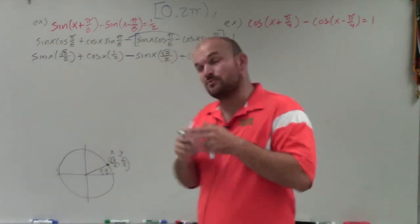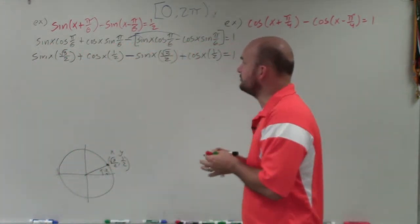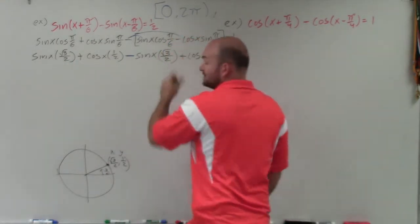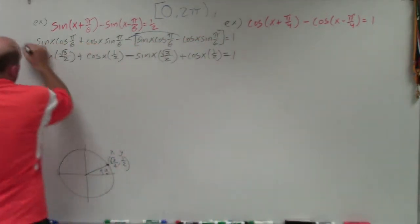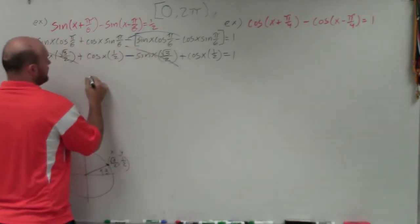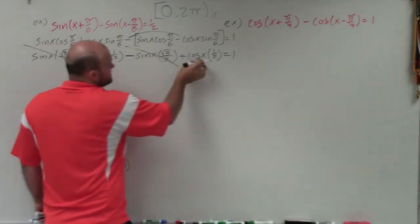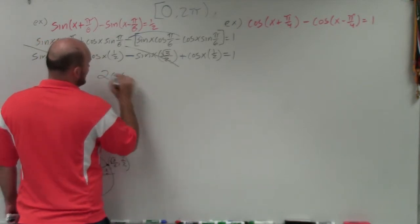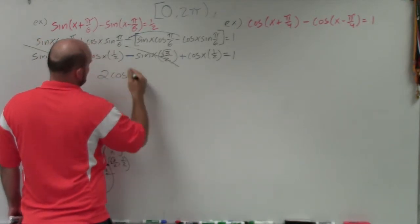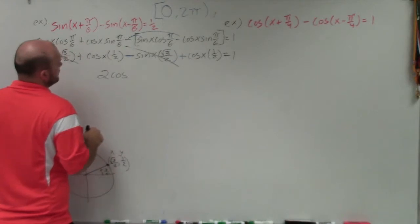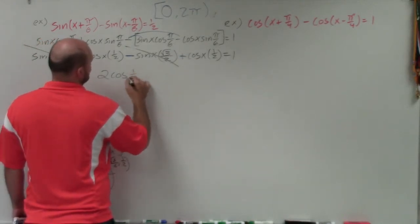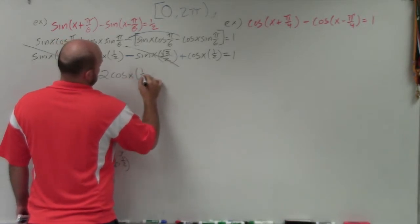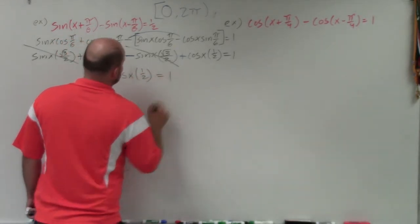What's nice about this — what's very important about making sure you distribute — is you can see that these are the exact same expressions: one's positive, one's negative, so they're going to add to 0. Therefore, I'm left with cosine of x times 1 half plus cosine of x times 1 half, which gives me 2 times cosine of x times 1 half, which is equal to 1.